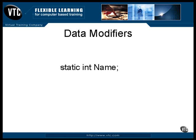You can make a variable into a named constant value by using the final keyword. When you declare a variable as final, its value can never be changed. When you declare a data item as final, you must supply an initial value with it because that value cannot be changed later. It is now a constant.